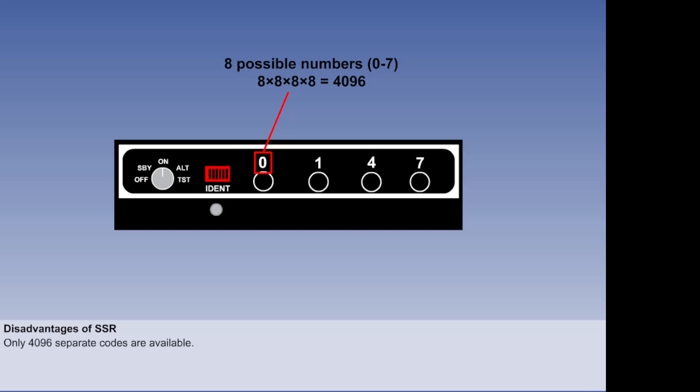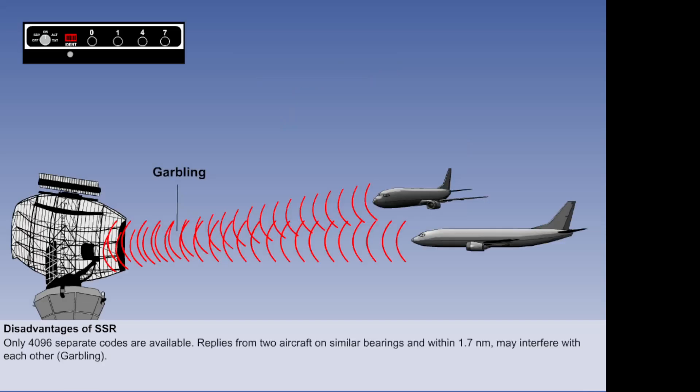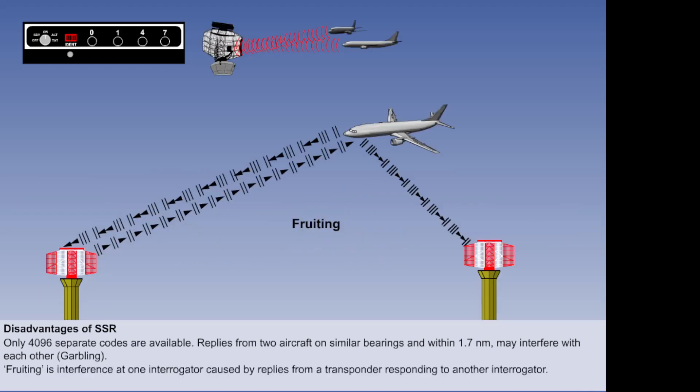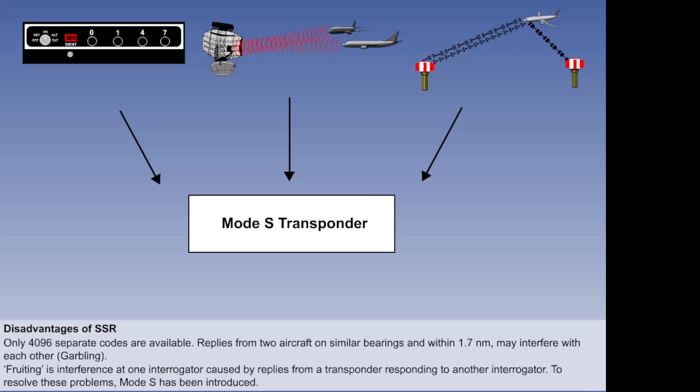SSR also has several disadvantages. Only 4,096 separate codes are available and given the number of aircraft in current and projected use, it is not enough. SSR is subject to garbling. This is caused by overlapping replies from two or more transponders on nearly the same bearing from the ground station and within a distance of 1.7 nautical miles from each other. SSR is also subject to fruiting. This is interference at one interrogator caused by replies from a transponder responding to another interrogator. As a result of these disadvantages, a new system called Mode S has been introduced and we will look at this in the next lesson.